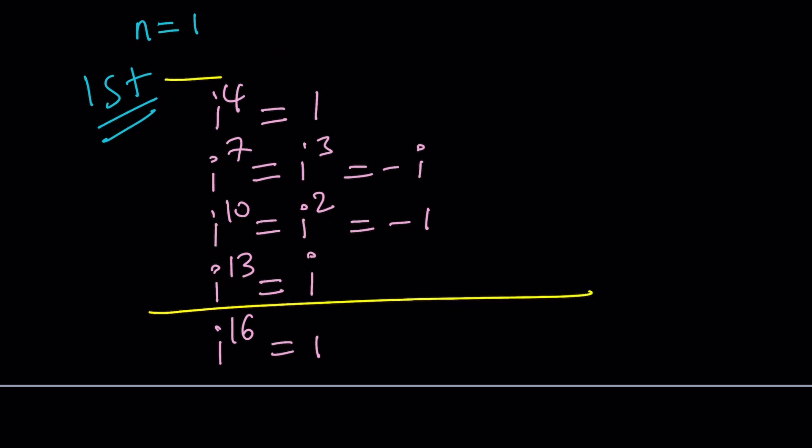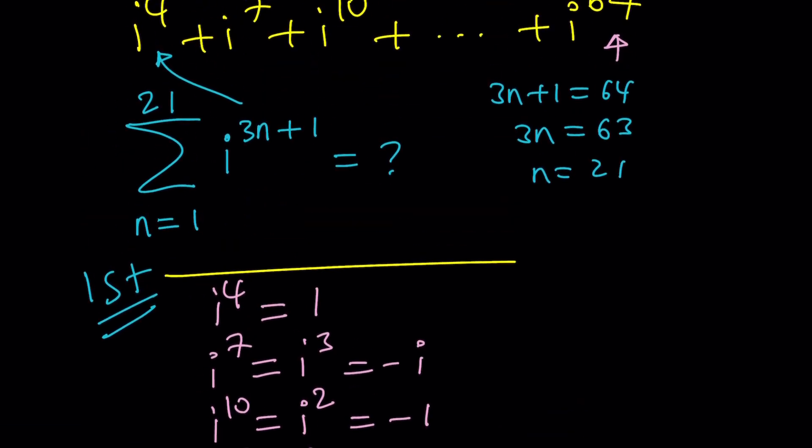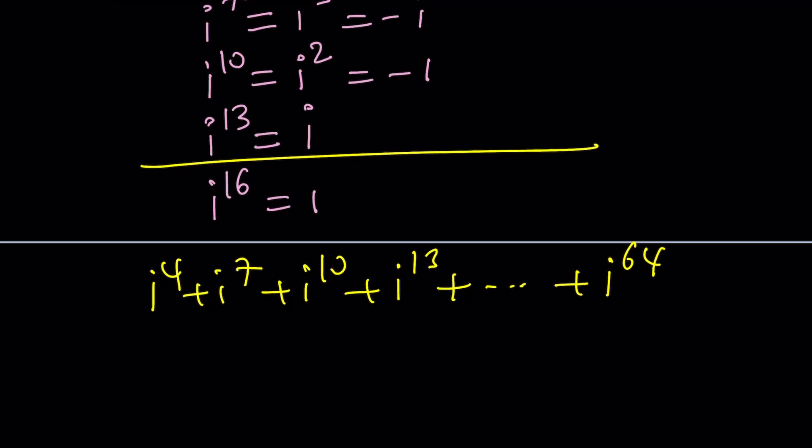We make groups of 4. We start with 1 and end with i. How many terms do we have? How do we find out? We have 21 terms. There you go. You see, that's what is cool about this sigma notation. So we have 21 terms. i to the 4th, i to the 7th, i to the 10th, i to the 13th, and then end with i to the 64th. We're going to have a leftover, because 20 is 4 times 5, and we have groups of 4. So 20, we will make 0.